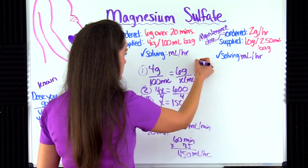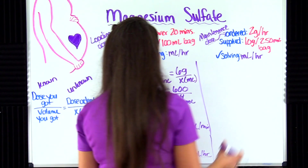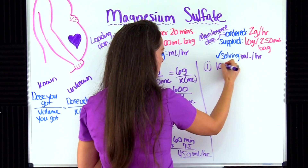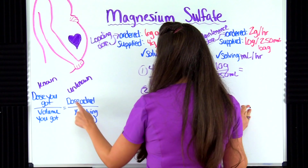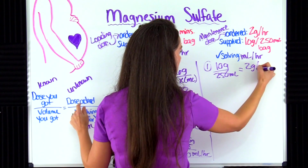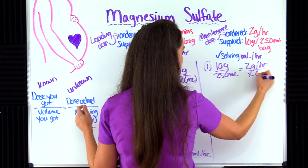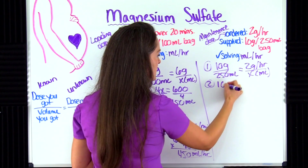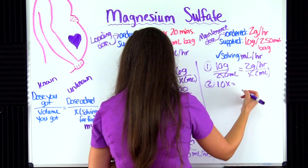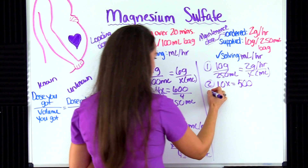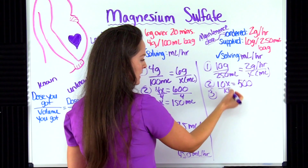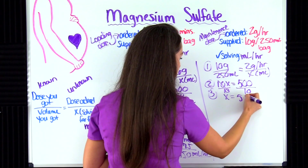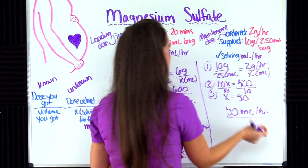Now for the maintenance dose. Known ratio: 10 grams over 250 mL equals the unknown ratio: two grams per hour over x milliliters. Units match, so cross multiply: 10 times x gives 10x, and 250 times two gives 500. Divide both sides by 10 — 500 divided by 10 gives 50. So the answer for the maintenance dose is 50 milliliters per hour.